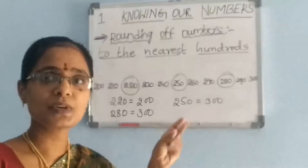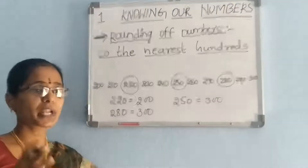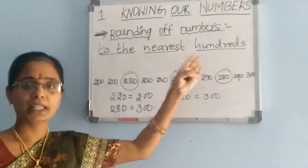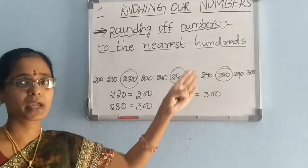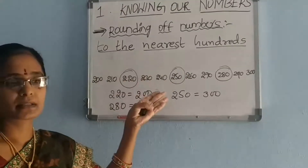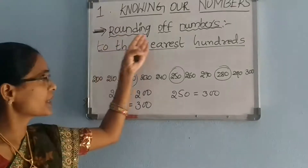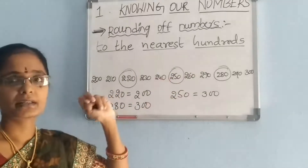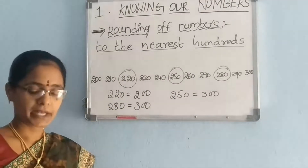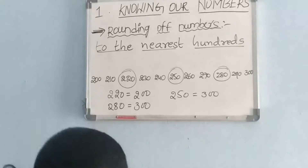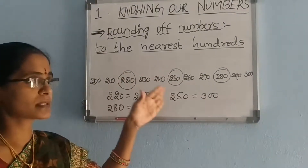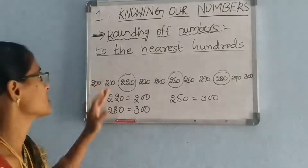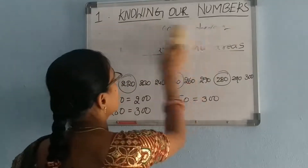Similarly, you have to do rounding of numbers to the nearest thousands, ten thousands, lakhs, and ten lakhs. This is the nearest hundreds example. Have you understood rounding up numbers to the nearest tens and nearest hundreds? So similarly you have to do rounding up numbers for thousands, ten thousands, lakhs, ten lakhs, etc. This topic is completed.